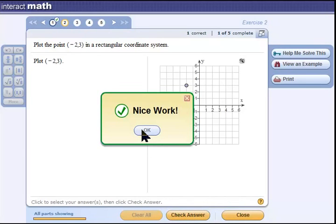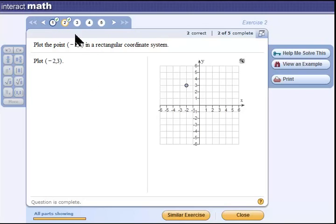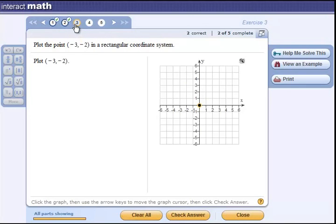I go on to number 3. Oh, two negatives! Can I do this? Yes, of course, because it's all a matter of understanding the language. Here's negative 3, the first number, that's the x coordinate. If it's negative I move to the left. The second number, negative 2, is the y coordinate. If it's negative I move down.